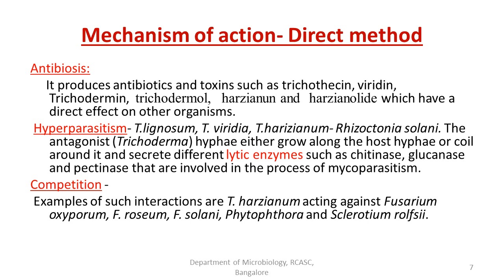Another method of action is by competition, where Trichoderma species compete for the same limiting factors and grow vigorously compared to other fungi. For example, Trichoderma harzianum acts against Fusarium oxysporum, Fusarium roseum, Fusarium solani, Phytophthora, and Sclerotium — competing with them and growing so vigorously that the other pathogens may not survive due to lack of nutrition. These are the different mechanisms through which Trichoderma kills the pest: by producing various toxins, by hyperparasitism, or by competition.